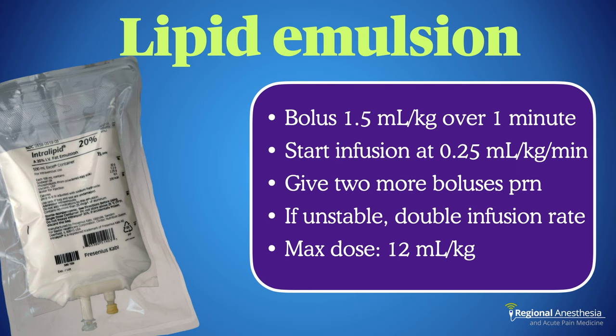Delegate one individual to manage the lipid portion of the resuscitation. Direct them to draw up 1.5 mL/kg as a bolus dose and administer it quickly. Once the bolus is finished, start an infusion at 0.25 mL/kg/minute. Up to two more boluses of the same dose can be given if needed, and the infusion rate can be doubled for refractory hypotension, with a maximum dose of 12 mL/kg. For a math-free approach assuming 70 kg ideal body weight: a 100 mL bolus and 1000 mL/hour on the pump. Lipid emulsion is well-tolerated — give it at the first clinical suspicion of LAST, as it can progress quickly.